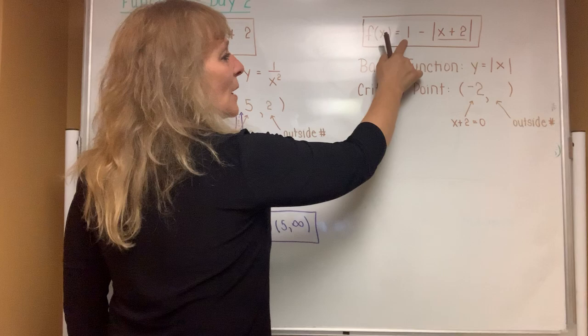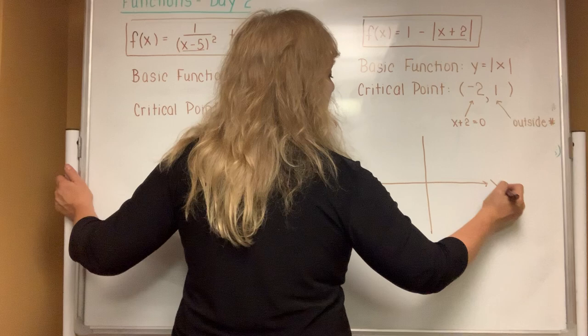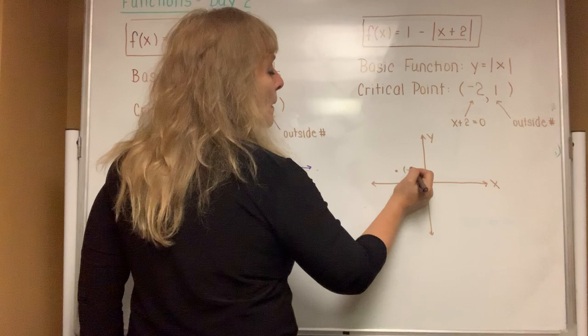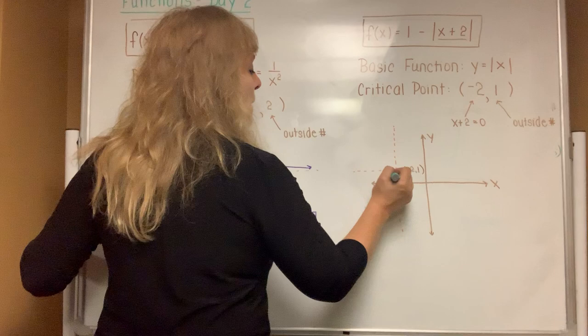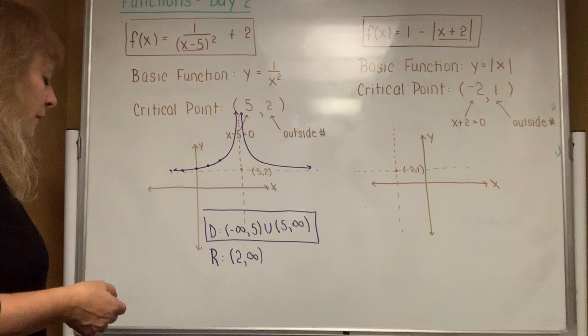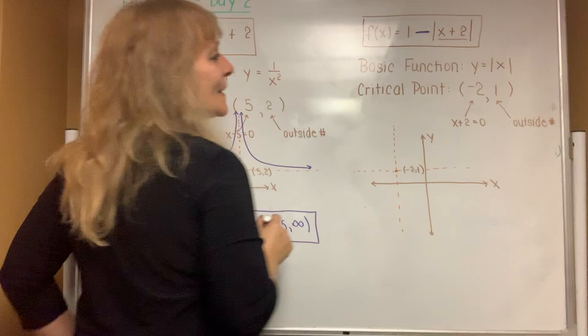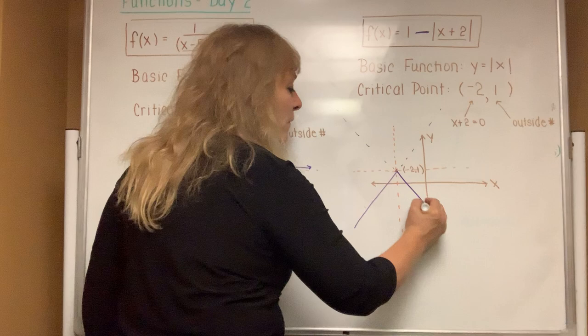The outside number is positive 1. Now draw the graph: label the x-axis and y-axis, label the critical point at negative 2, up 1. Expect to see dotted lines through the critical point vertically and horizontally. The absolute value function looks like the letter V, but if there's a negative sign in front of the basic function identifier, reflect your V over the horizontal dotted line — so your V is positioned upside down.